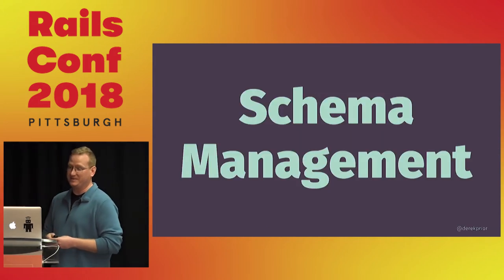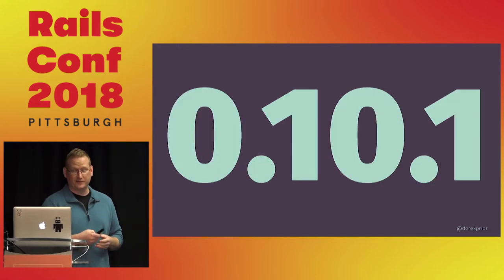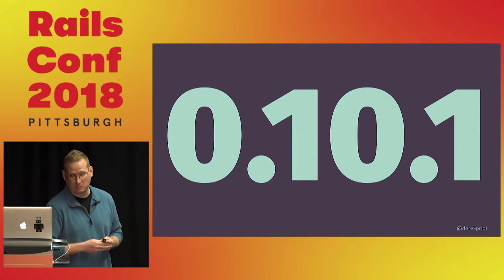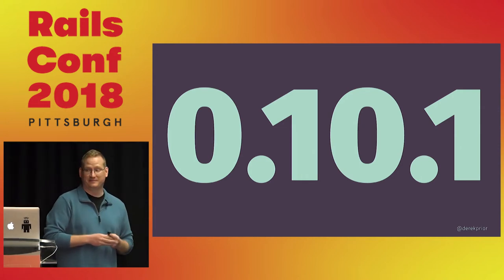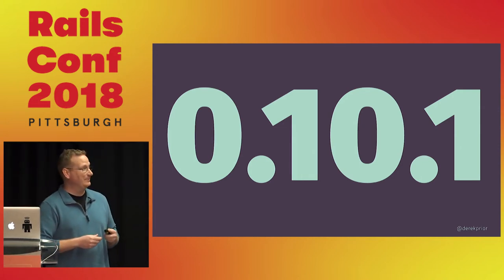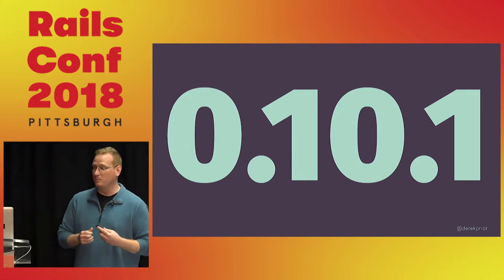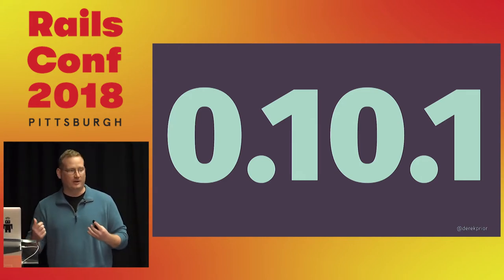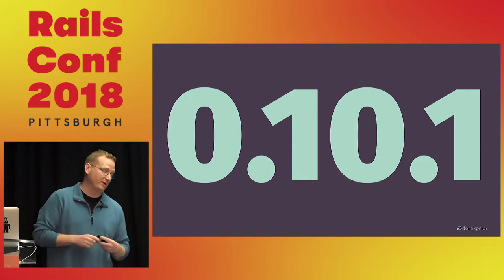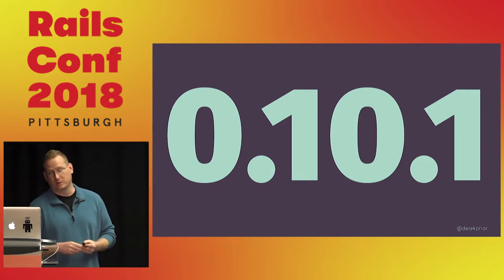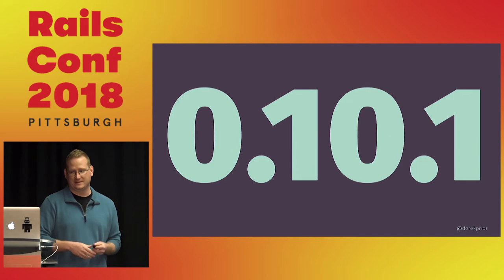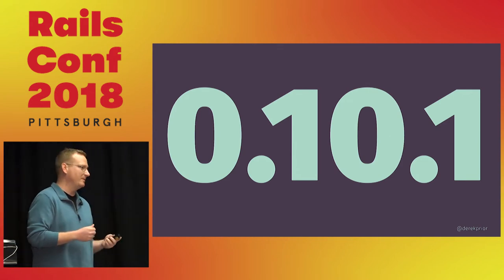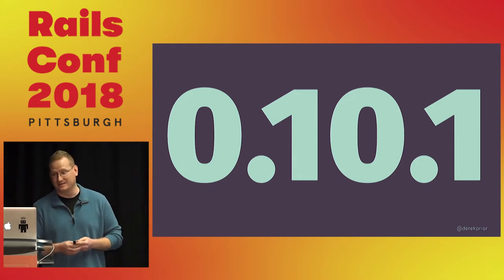So we're here today to talk about schema management in Rails. The first version with what we'd recognize as migration support came in Rails 0.10.1, which was released towards the end of 2005. As far as I've been able to tell, it's actually the first open source implementation of any sort of conventional schema management system that allowed developers to progress their database schema along with the code that required that database schema. And that's a pattern that became so immediately useful that it's hard to imagine a web framework that doesn't allow for such a thing these days.